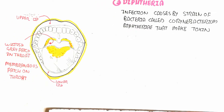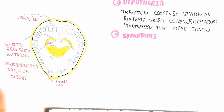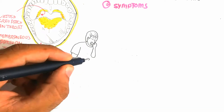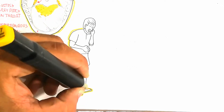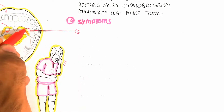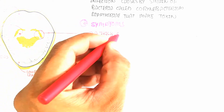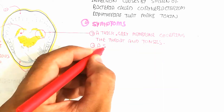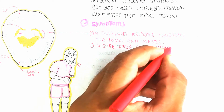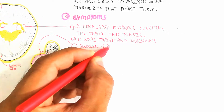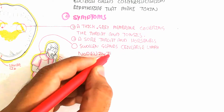This membranous patch is due to the infection, which leads to increased mucus on the surface. So the symptoms we will cover: a thick gray membrane covering the throat and tonsils is the sign and symptom of diphtheria. A sore throat and hoarseness are also symptoms, and swollen glands and enlarged lymph nodes in the neck are signs of diphtheria.